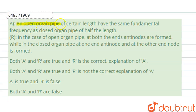An open organ pipe of certain length has the same fundamental frequency as a closed organ pipe of half the length. This is the assertion. The reason given here is: in the case of an open organ pipe, at both ends, anti-nodes are formed.